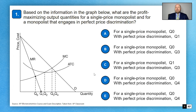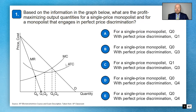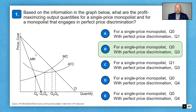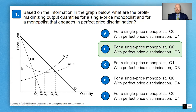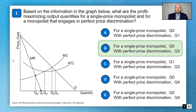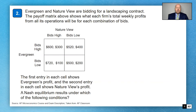The perfect price discriminator charges all prices along the demand curve until Q3, making the answer B. Additionally, in a single-price monopoly there is consumer surplus, but in perfect price discrimination there is no consumer surplus — because firms charge the maximum each consumer is willing to pay, so it all becomes profit.